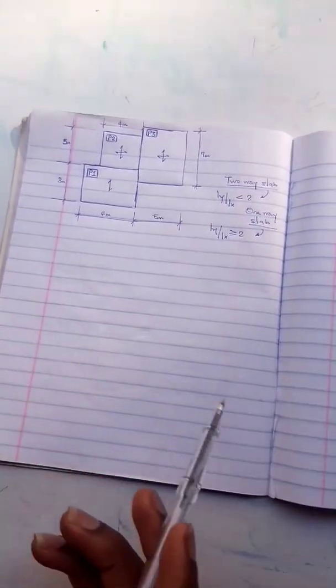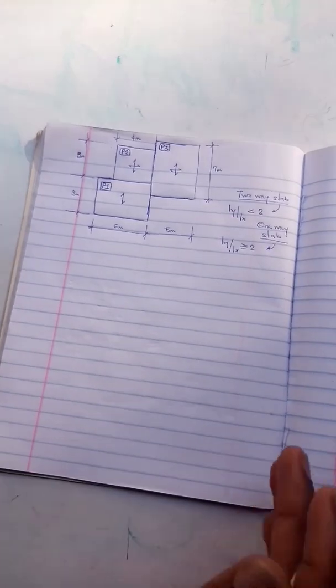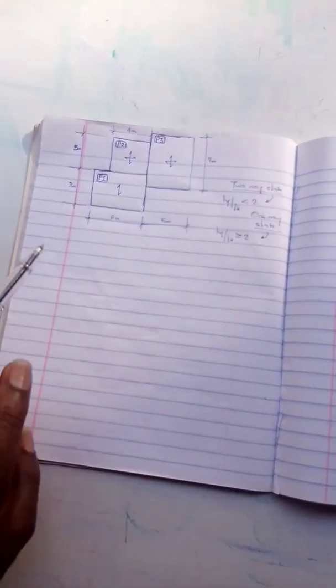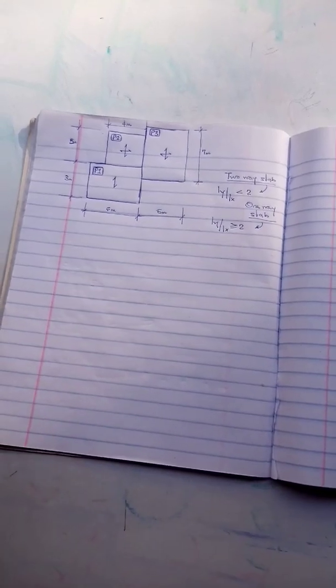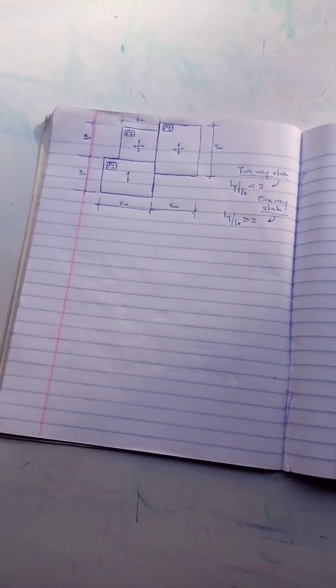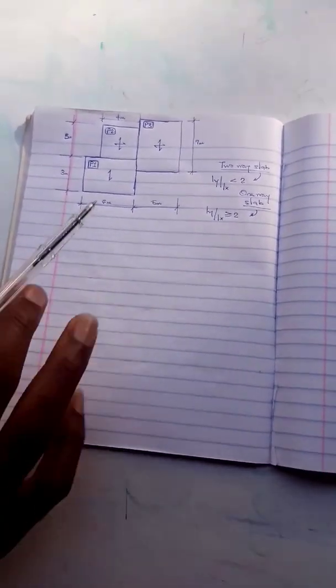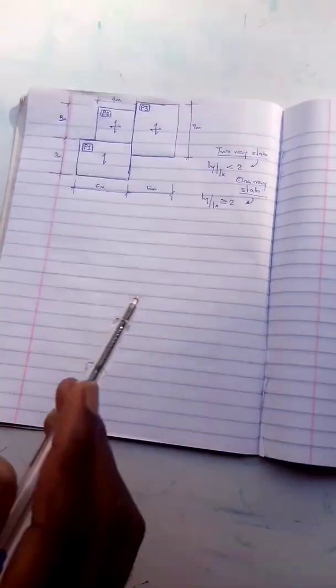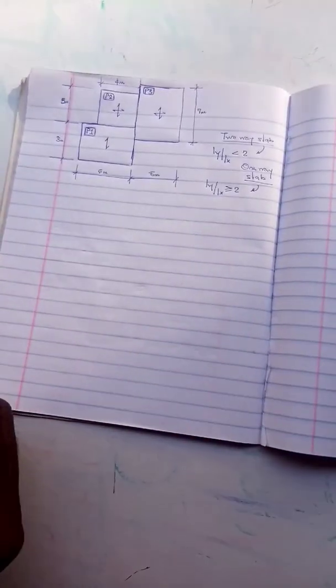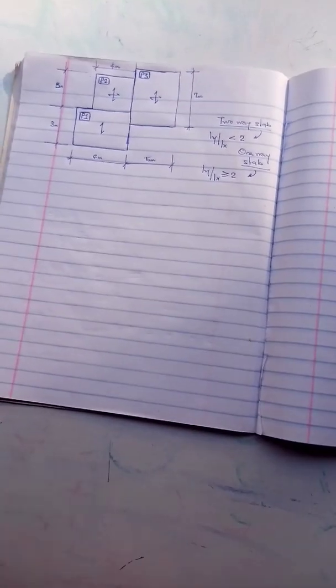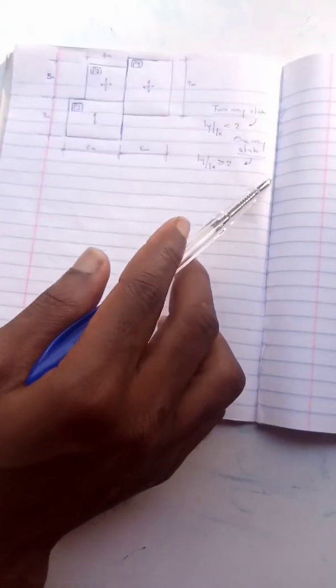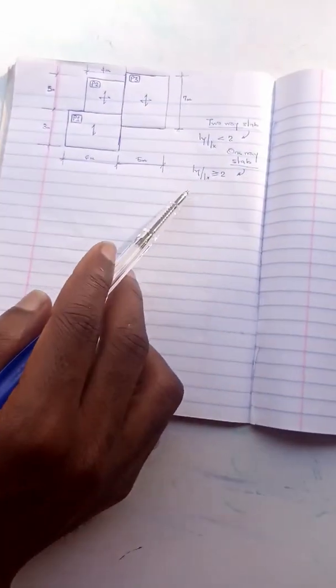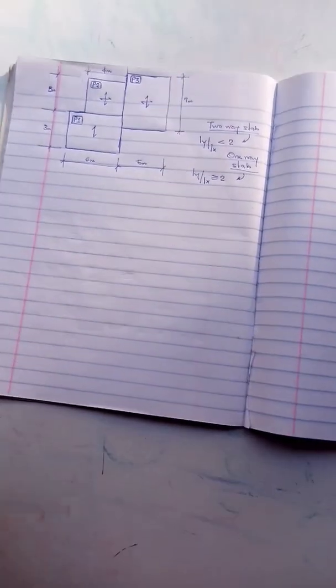We have a plan like this that we want to work with, a general arrangement. We have slabs as shown. Now we know that for a two-way slab the aspect ratio Ly over Lx should be less than two, while for one-way slab the aspect ratio should be greater than or equals to two.